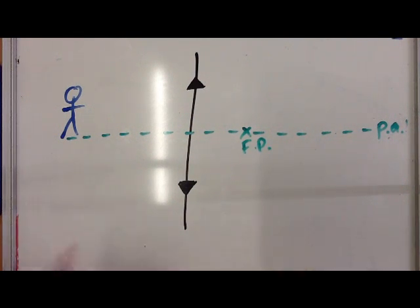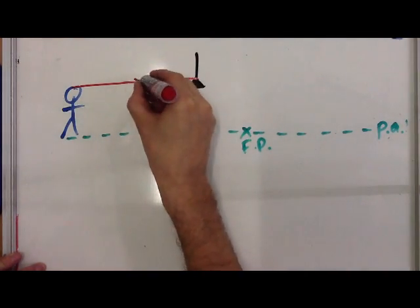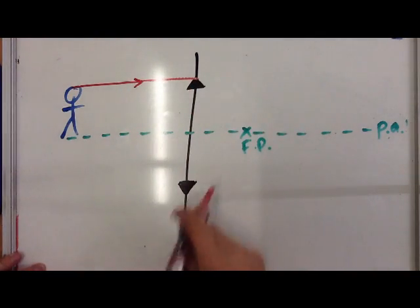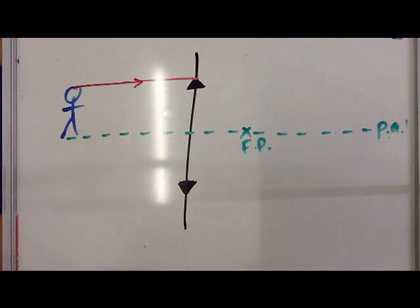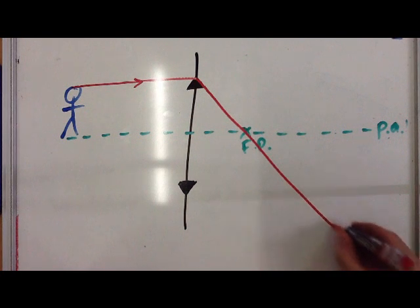Now, we follow the same rules we always follow. The first line comes from the top of the object and is parallel to the principal axis. I ignore these arrows here, they only tell me what sort of lens it is, not where the lens is. It comes from here and has to go through the focal point.